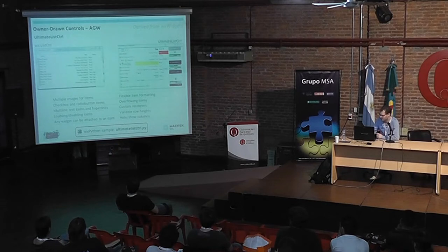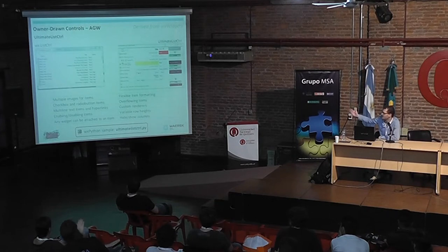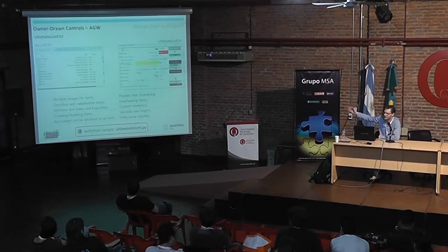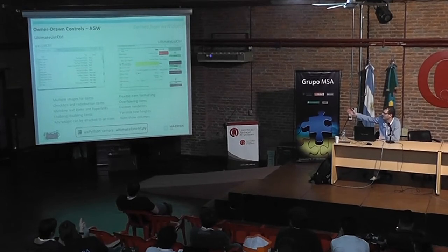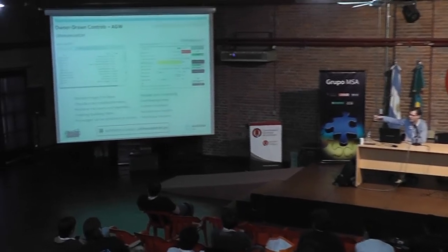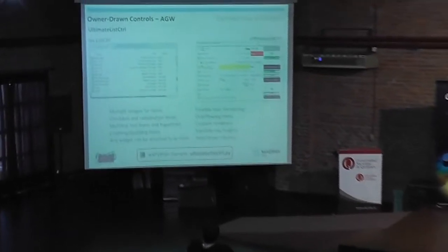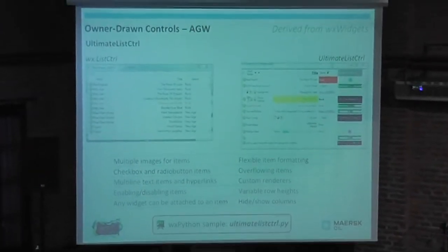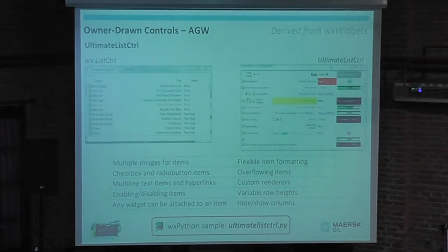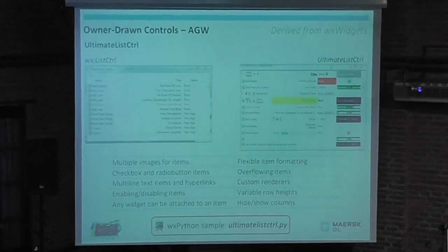Another example: also derived from a generic WX Widgets implementation — a list control. On the left is the native one; on the right is the completely owner-drawn one. The owner-drawn version offers many more options: attaching a widget to an item, gradient selection, multi-line text, different images, different image sizes, and your own renderer for a column. There are so many options that even the demo doesn't list them all. A sample is available.